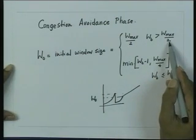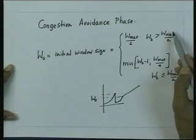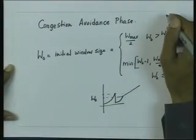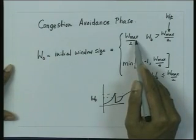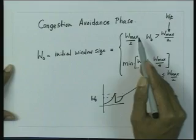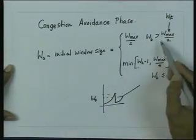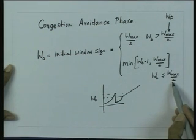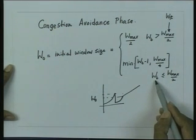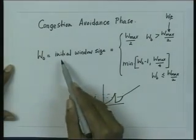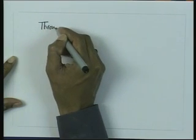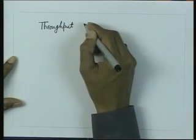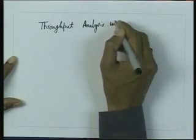If Wb is greater than W_max/2 — which was the initial slow start threshold Wt — then no buffer overflow occurs in the slow start phase, and the initial window size in the congestion avoidance phase is W_max/2. However, if Wb is less than or equal to W_max/2, the maximum window size at which buffer overflow can occur is less than the slow start threshold, and therefore the congestion avoidance phase will start from that point. We will now analyze the throughput in the congestion avoidance phase.